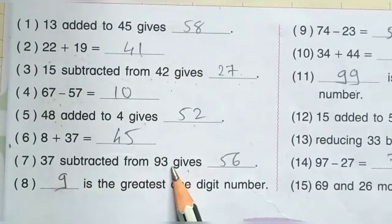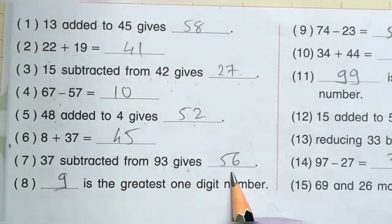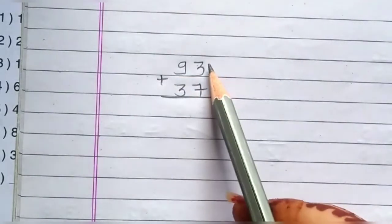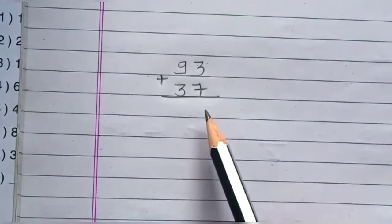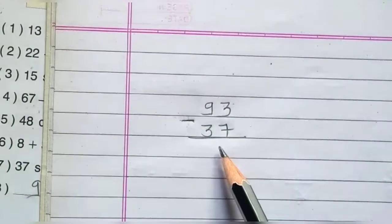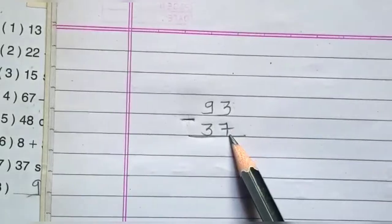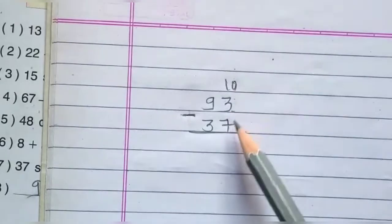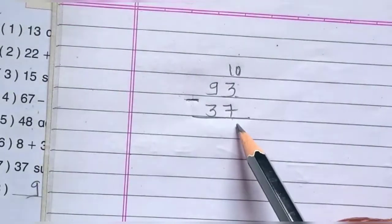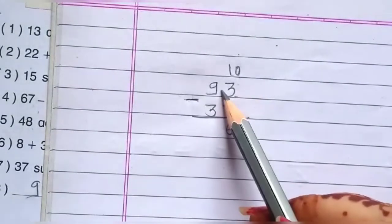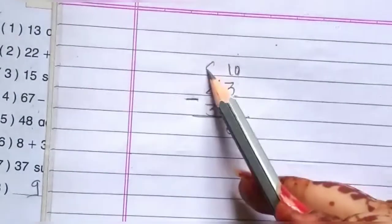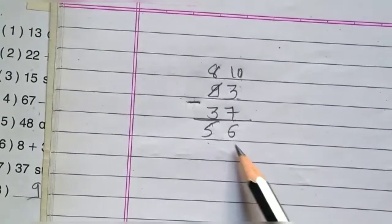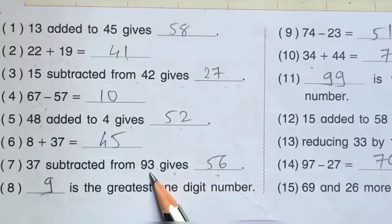Number 7: 37 subtracted from 93 gives — 93 minus 37 is equal to 56. कैसे करना है: 3 में 7 कटने होगा, तो upper side से 10 लेंगे — 10 plus 3 is 13, 13 minus 7 is equal to 6. याँ पे 10 लिया तो आगे वाला 1 cut होगा, तो 9 cut, upper side 8. 8 minus 3 is equal to 5. तो answer is 56. 93 minus 37 is equal to 56.